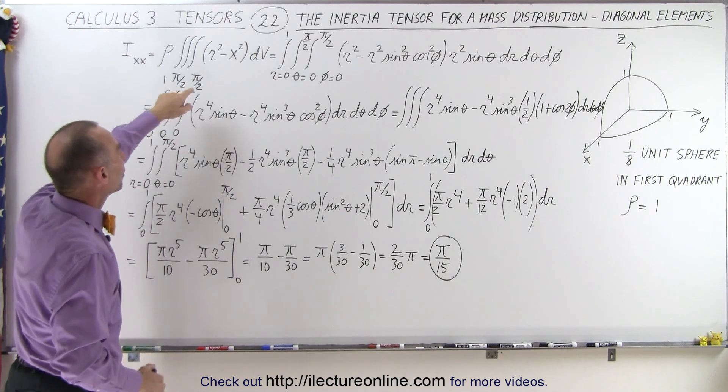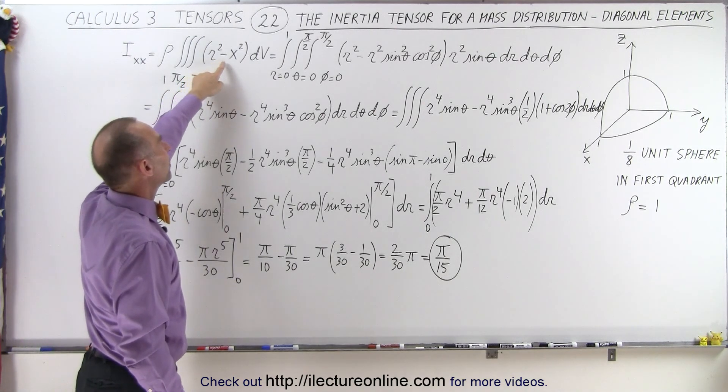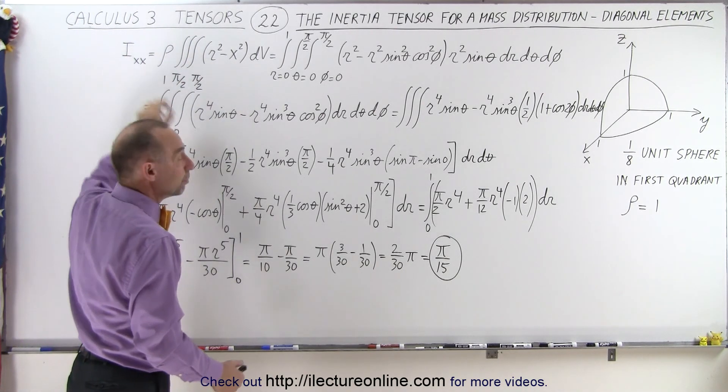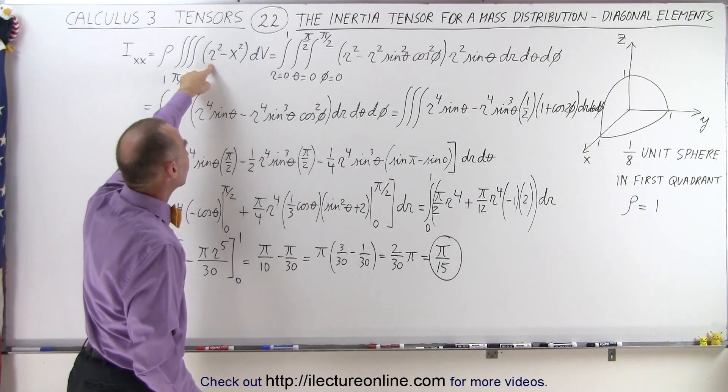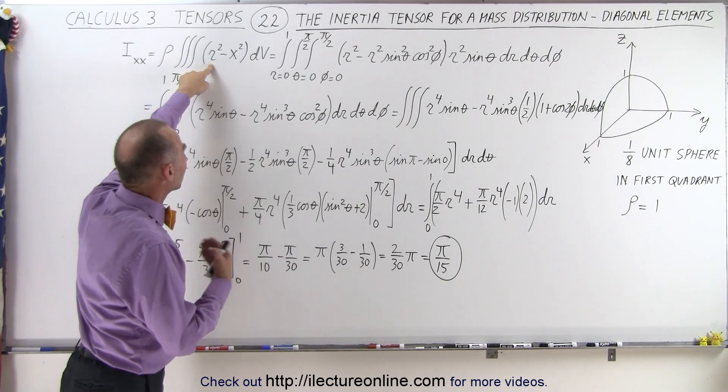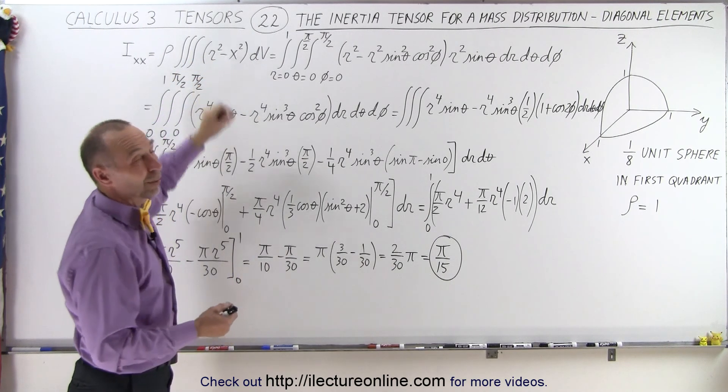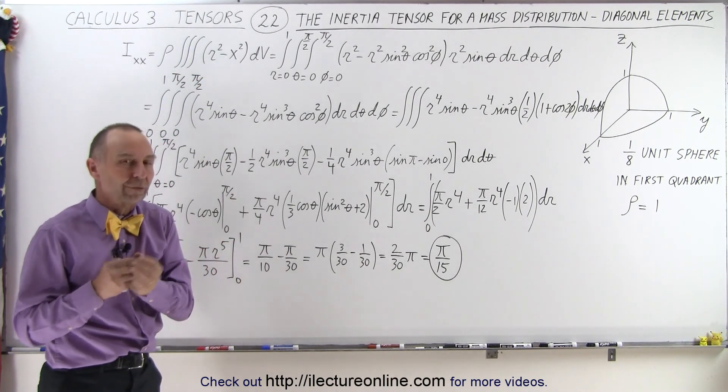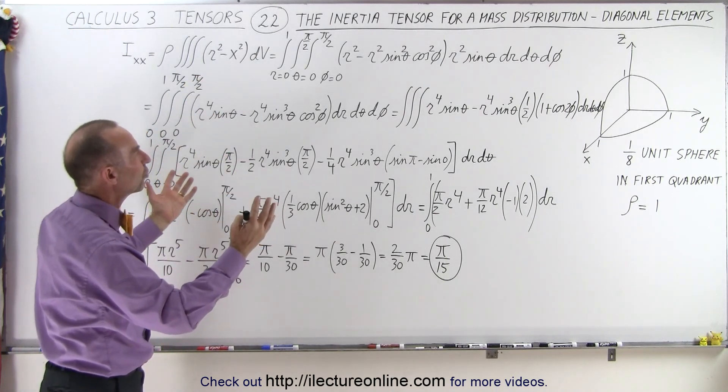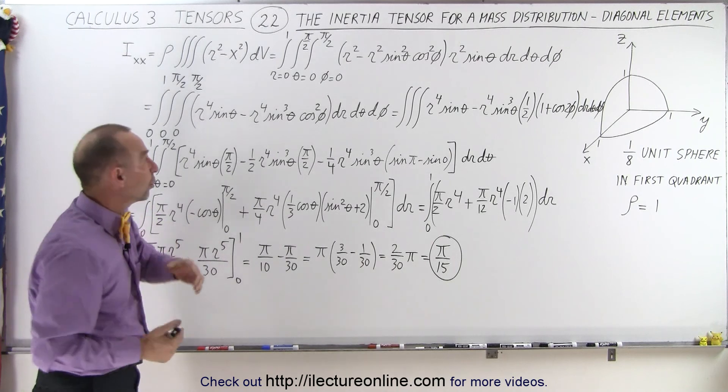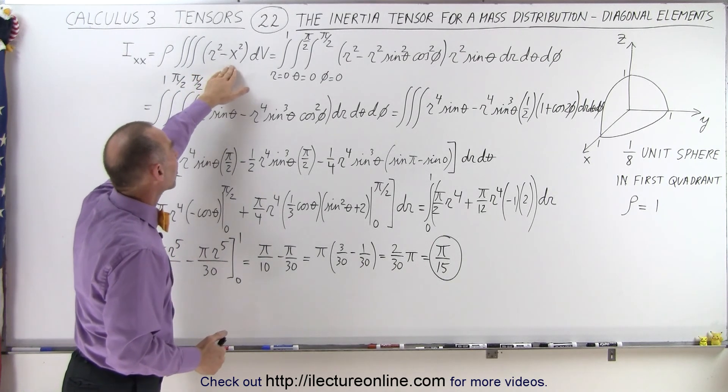Remember that we started out with the equation r-square minus x-square for the Ixx component, even if we had a single point mass. Since r-square equals x-square plus y-square plus z-square, the x-squares would cancel out, and this ends up to be y-square plus z-square for a single unit element. But since we have now a mass distribution and we're going to work with spherical coordinates, we should leave it as r-square minus x-square.